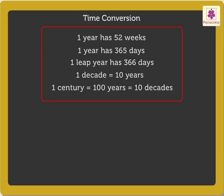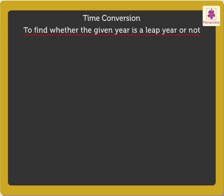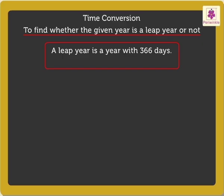Now, let us learn how to recognize whether the given year is a leap year or not. We know that a leap year is a year with 366 days, wherein the month of February has 29 days.